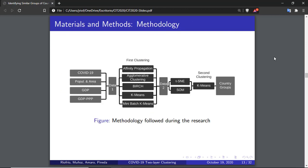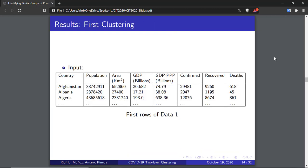The methodology followed during this research is presented in these slides. There are two clustering layers as it can be appreciated in the figure. In the results section, we present all the main findings of the first and second clustering steps. In this slide, we can appreciate the first rows of the input data of the first clustering. This is the dataset explained in the materials and methods section. Only the first three rows are shown in the table, but it has a total of 163 rows or countries.